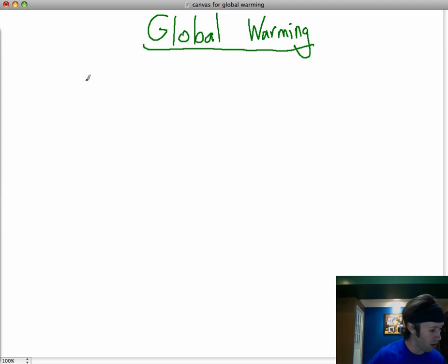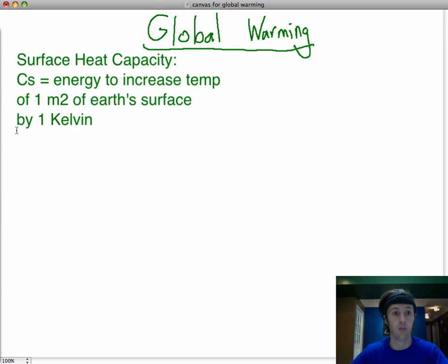And one thing that we are going to start out with is what's called the enhanced greenhouse effect. And before we do that, you're going to have to know something about a term called surface heat capacity. Okay, so there it is. That's the definition of surface heat capacity.